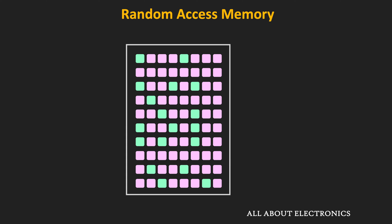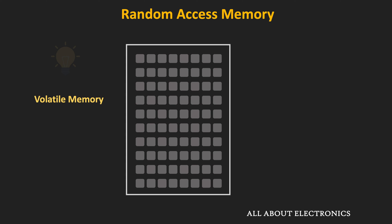All words in the RAM contain information in 1s and 0s. RAM is a volatile memory, meaning the information stored in the memory will remain as long as it is powered up. As soon as we switch off the power, the information stored in the memory will be lost. That means RAM is a volatile memory.